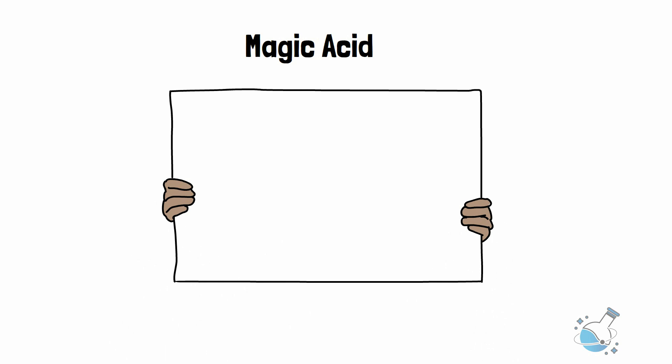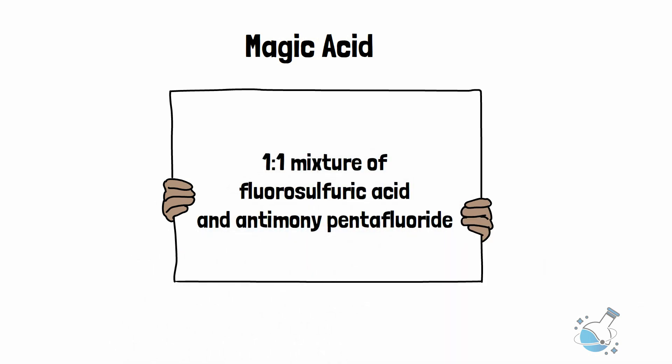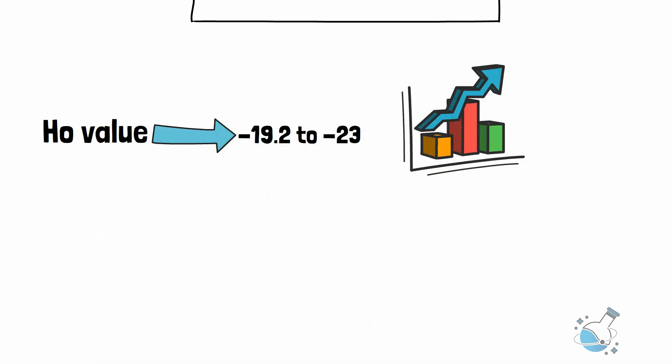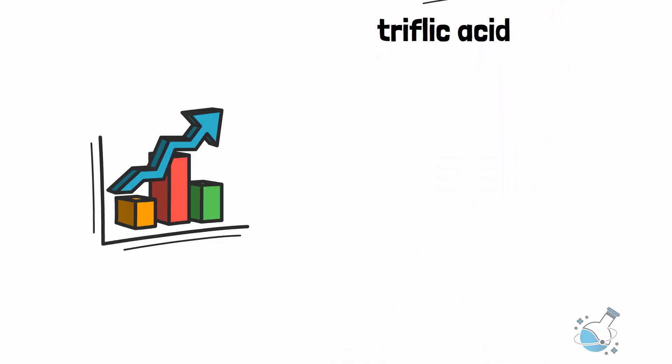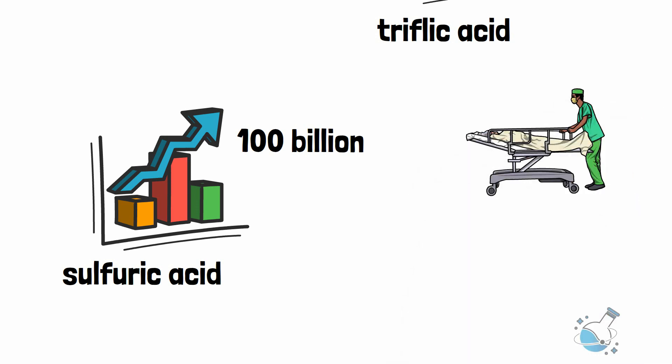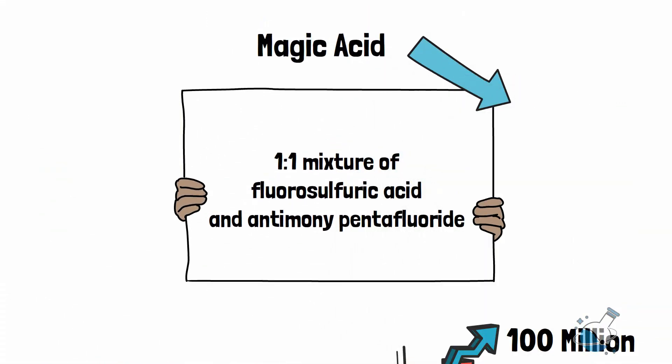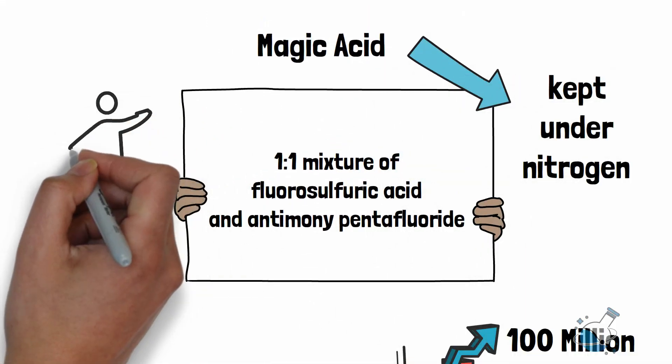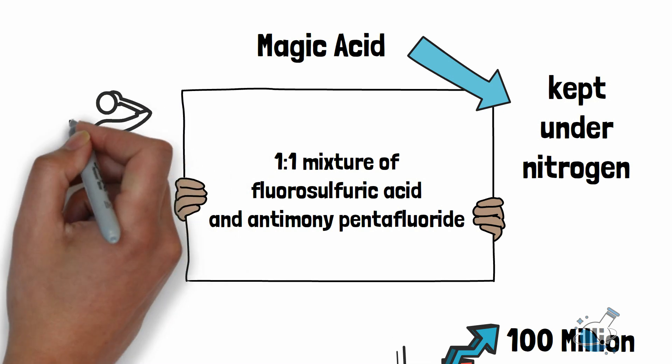Magic acid is a one-to-one mixture of fluorosulfuric acid and antimony pentafluoride. It has an H0 value of minus 19.2 to minus 23 depending on the ratio of components. Meaning it is hundred million times stronger than triflic acid and hundred billion times stronger than pure sulfuric acid. When comes in contact with the body, it will cause serious injury if not death. It is so reactive that it is kept under nitrogen which creates an inert surrounding. Still, it is not the strongest acid on earth.